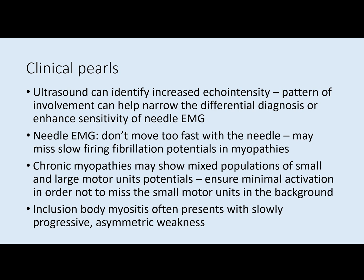Chronic myopathies can show mixed populations of small and large motor unit potentials and they can be very challenging EMG studies. Your initial thought may be that it's a neurogenic process because you see these big ragged motor unit potentials and sometimes even reduced recruitment is apparent. But if you take care to get minimal activation, you're more likely to pick up those small motor unit potentials in the background in the muscles that do have mixed populations. Lastly, inclusion body myositis often presents with slowly progressive weakness that is often asymmetric, especially early on. And that's the end of this teachable moment.